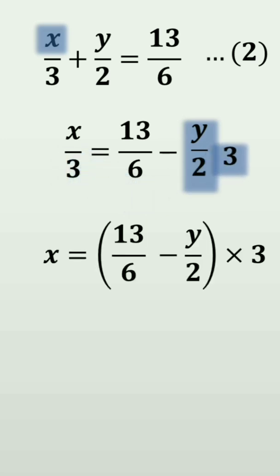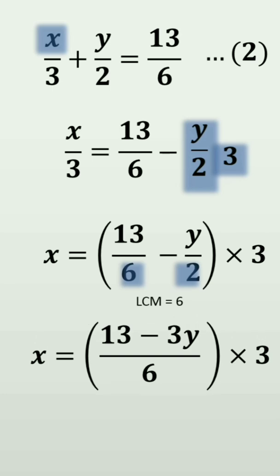So, we can rewrite as x is equal to 13 by 6 minus y by 2 into 3. LCM of 6 and 2 is 6. So, we can rewrite the equation as 13 minus 3y by 6 into 3.